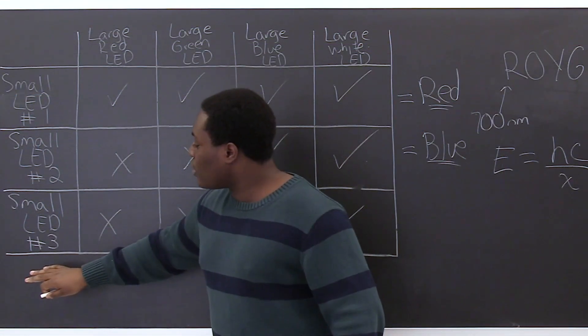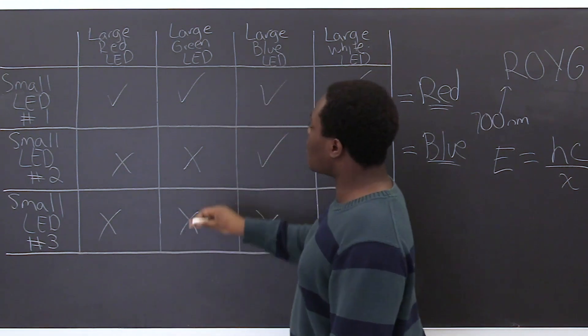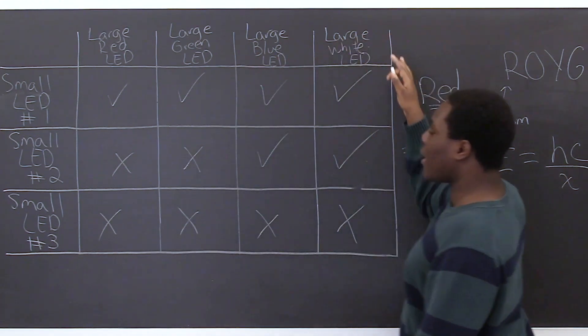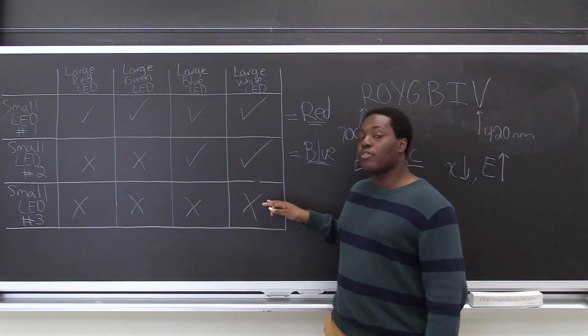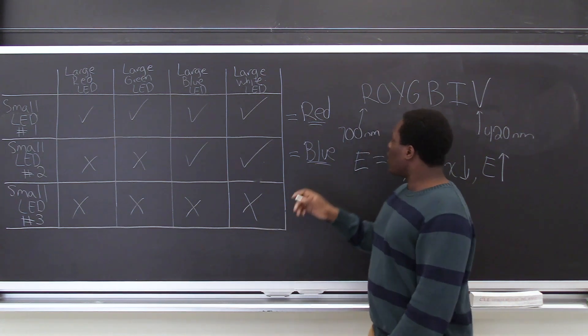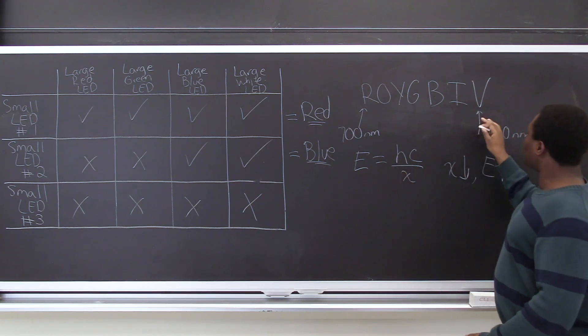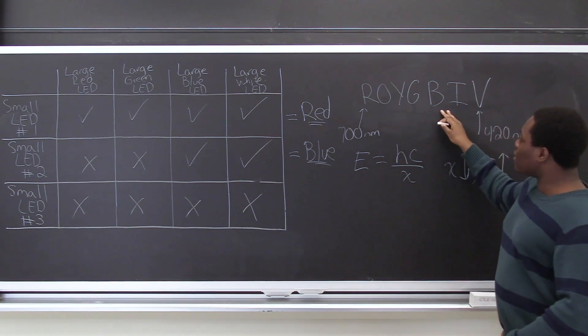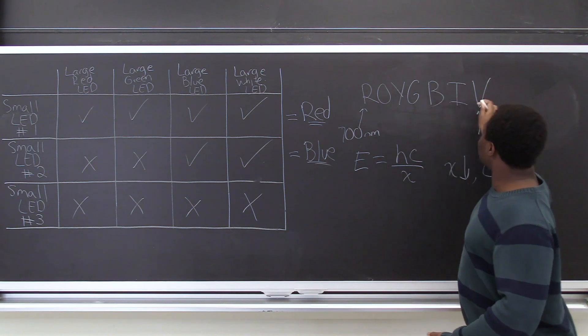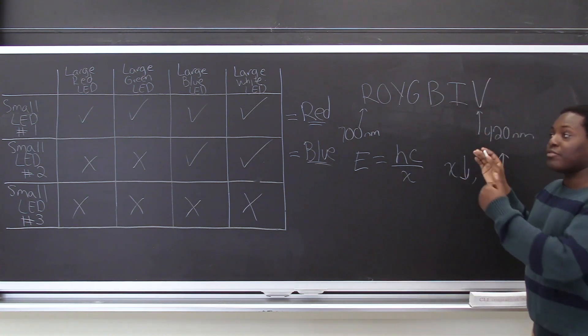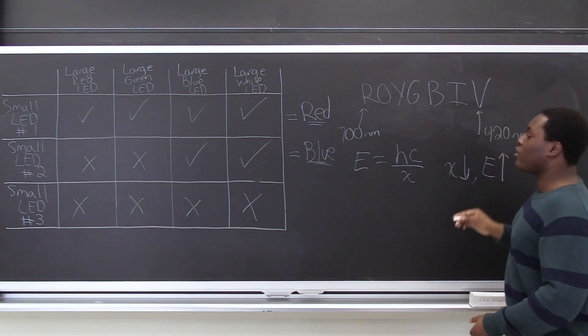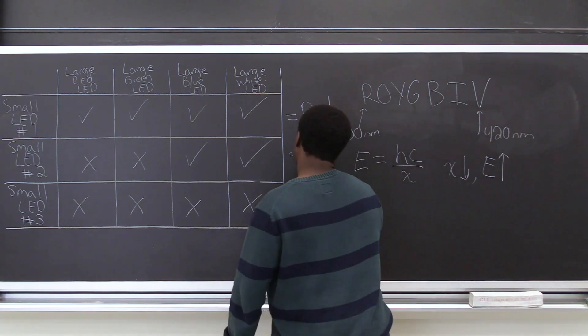So finally if we look at small LED number three we can see that red green blue and white light did not have sufficient energy to cause some voltage drop across the LED. If we look back to ROYGBIV and we think about the energy of red to blue that means that they didn't have enough energy to excite anything after it. And that means that our final LED must be violet or purple.